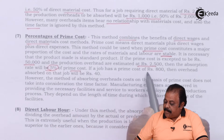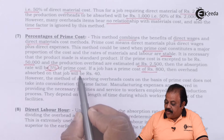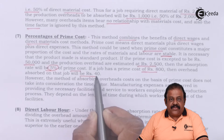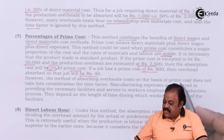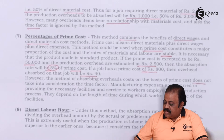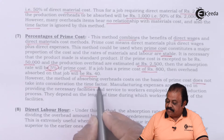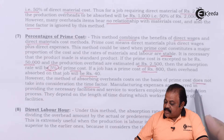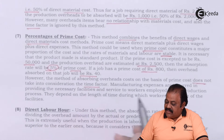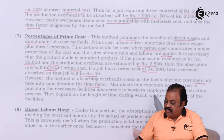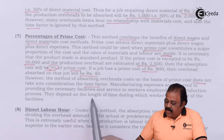If a job has a prime cost of Rs. 800, the overhead absorbed for that job will be Rs. 40. However, this method does not take into consideration the time factor. Manufacturing expenses depend on the length of time during which the worker makes use of the facilities and services provided in the production process.